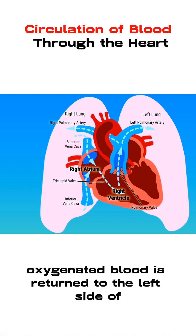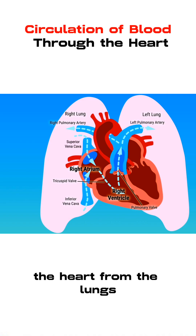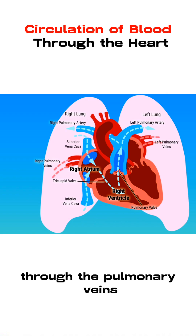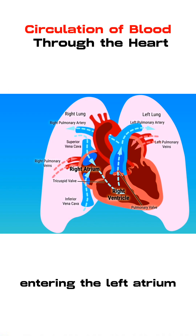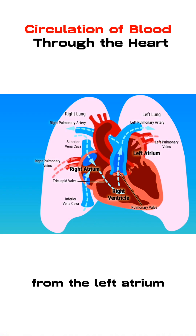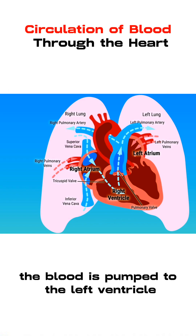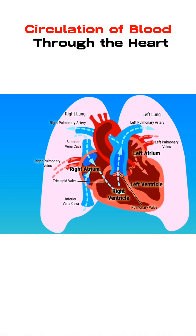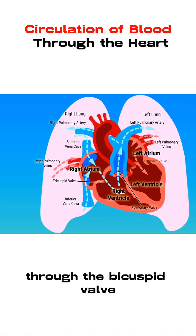Oxygenated blood is returned to the left side of the heart from the lungs through the pulmonary veins, entering the left atrium. From the left atrium, the blood is pumped to the left ventricle through the bicuspid valve.